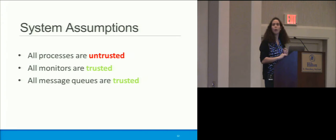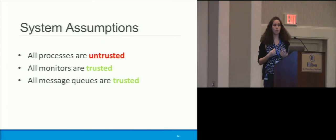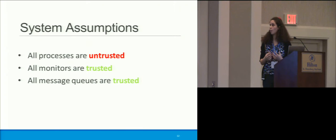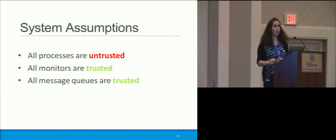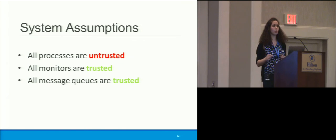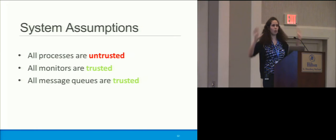What are the assumptions in our monitoring system? First, we don't trust any processes — as far as I know, they're all bad, they're all rogue. But I do trust my monitors and my messaging queues. I assume there's some network layer that handles this, because I really don't want to think about that.